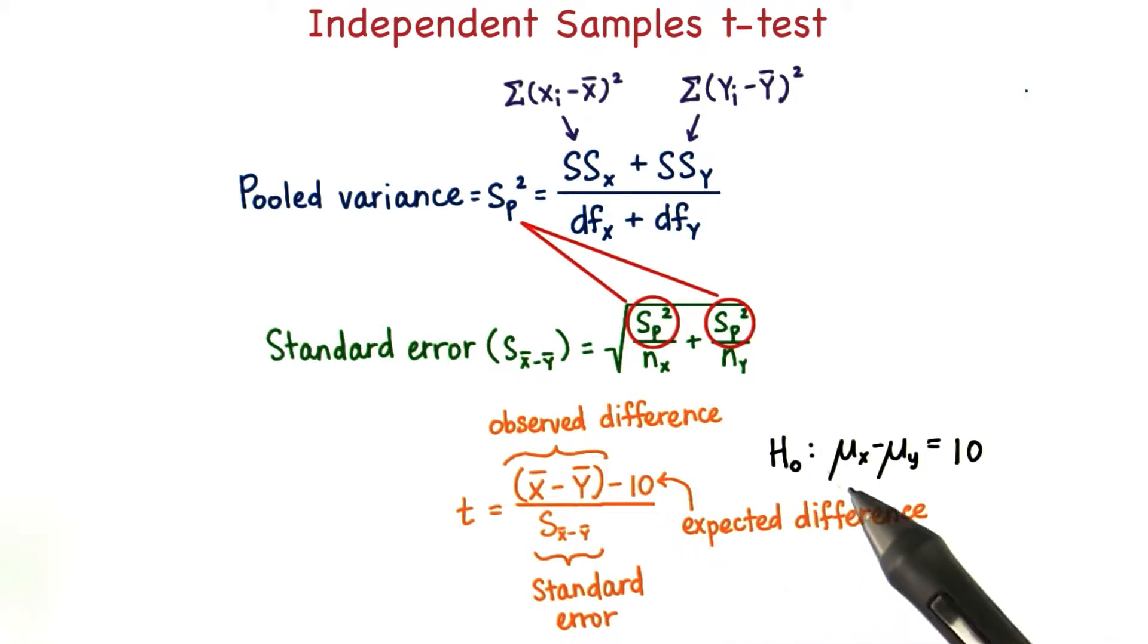But in general, in this class, our null hypothesis has been that there's no significant difference between the two populations. In other words, we expect that the difference between the parameters is about 0.